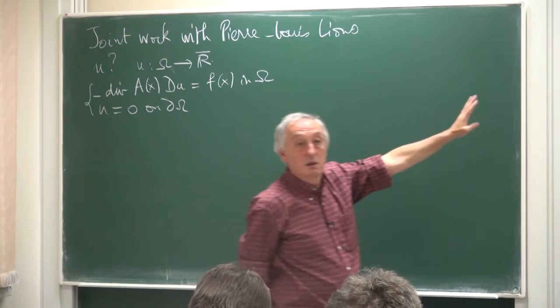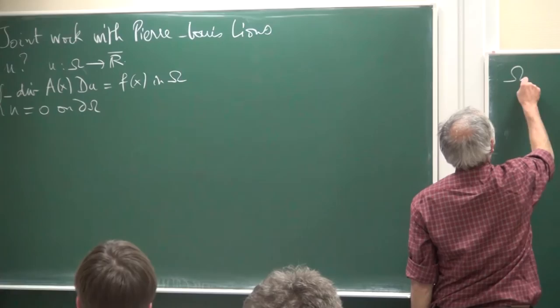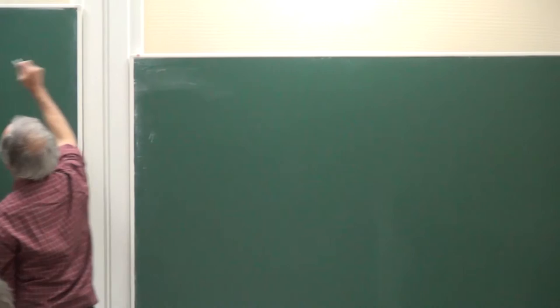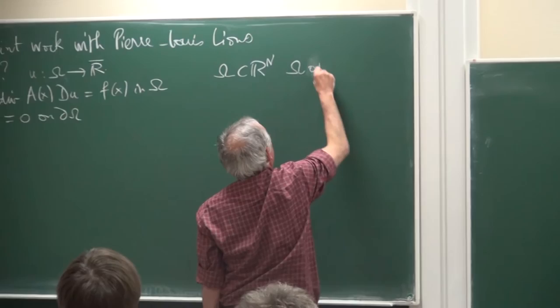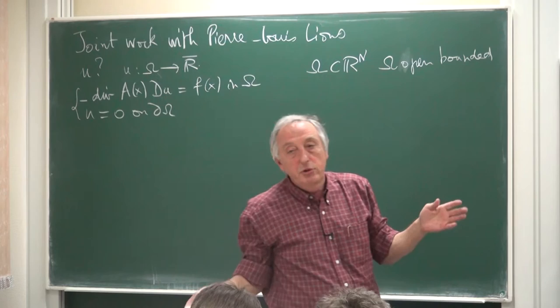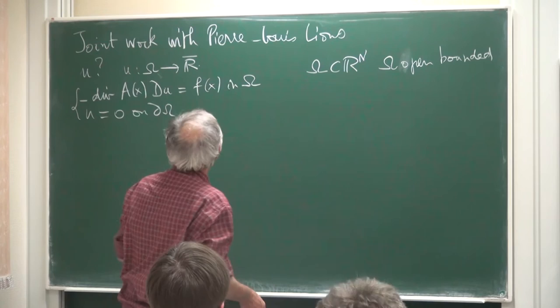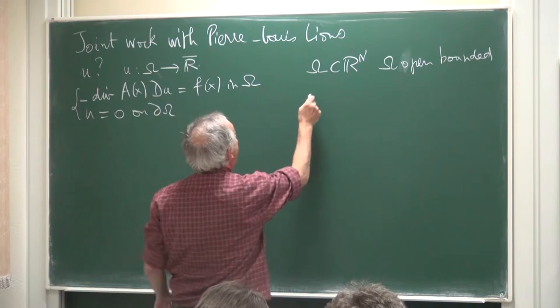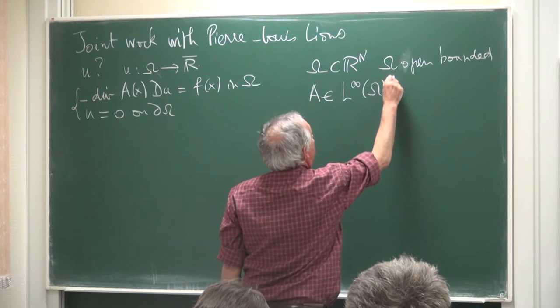So here I will write all the hypotheses I need. I will begin with Ω: Ω is included in ℝⁿ, Ω is open and bounded. Open is essential; bounded — you can make the unbounded case, but if you don't understand the bounded case it's a little bit more complicated.